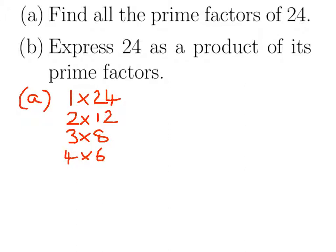5 isn't going to work because 24 isn't in the 5 times table. Then we hit upon 6, but we've already got that on the right-hand side, so we now know that we've got all the factors of 24.